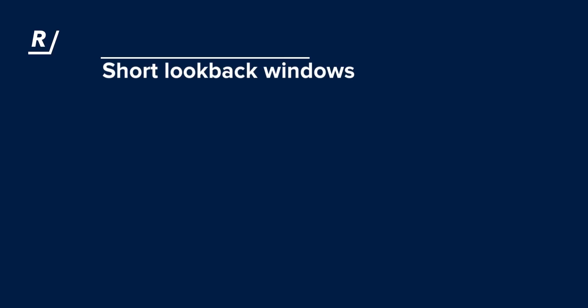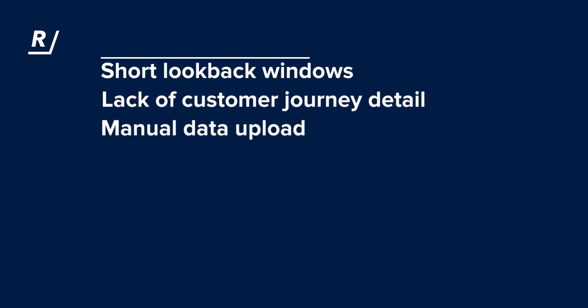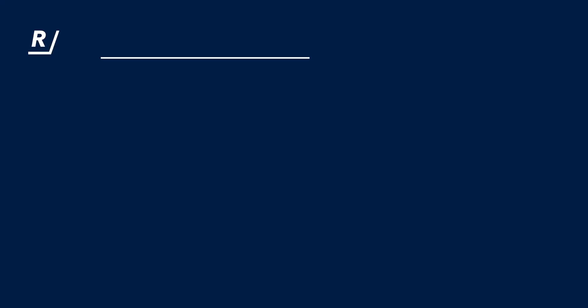The data you see in GA4, however, has its limitations. As far as attribution is concerned, these limitations can be whittled down to short look-back windows, a lack of customer journey detail, and manual data upload. Google Analytics 4 only offers short options for look-back windows. For acquisition conversion events, you can either choose 7 days or 30 days. How often do you make a purchasing decision within a month, particularly for high-value items or in the B2B space? This limitation means you're likely going to be unable to attribute closed sales back to your marketing activities. For other conversion events, you can choose between 30, 60, or 90 days, but these aren't for acquisition-based conversions. They're likely to be used for lead conversions, which, although useful, is still not ideal for accurate reporting.